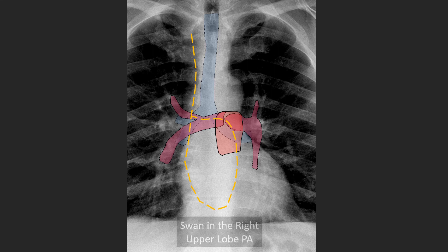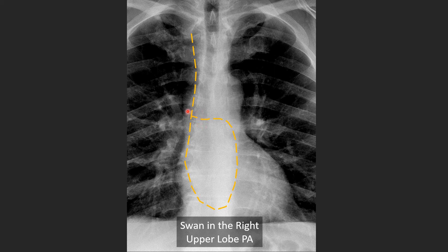Here's a catheter entering the right upper lobe pulmonary artery. Using the right main stem bronchus as the cutoff, we can see that the catheter begins to slightly upslope towards the upper lobe pulmonary artery.